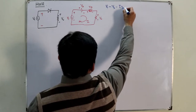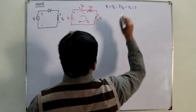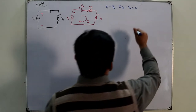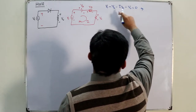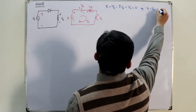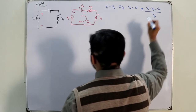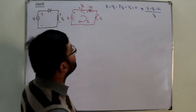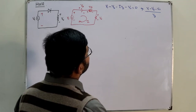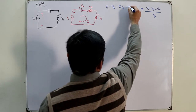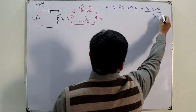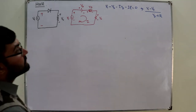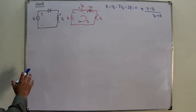Applying KVL: v_i minus V_b minus i times R_d minus v_output equals zero. From this we can find the current: i equals (v_i minus V_b) divided by (R_d plus R). Since v_output equals i times R, we substitute to get v_output expressed in terms of the input.